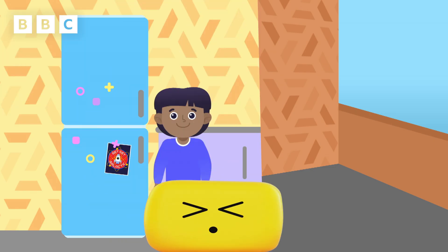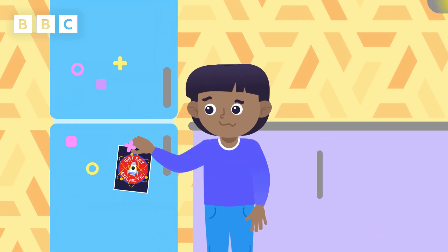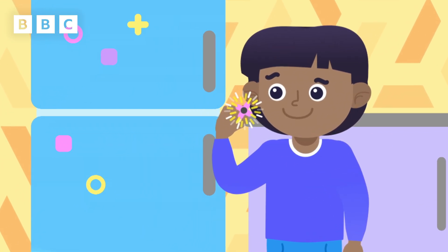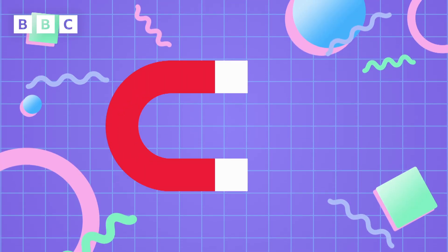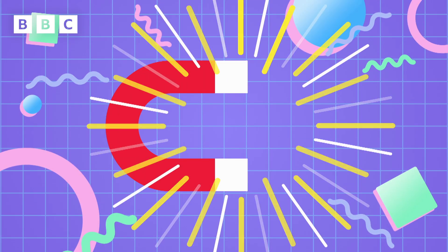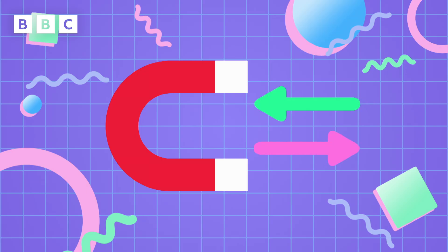Have you ever wondered how magnets stay on a fridge? It's because of an invisible force called magnetism. A magnet is an object that has a magnetic field, and that magnetic field either attracts or repels other magnetic objects, like the metal these items are made of.